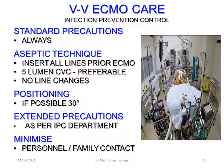For infection prevention and control, standard and universal precautions are always implemented, especially hand hygiene and aseptic technique. Prior to ECMO, a five-lumen CVC is preferable to provide multiple access lines without extra punctures. No line changes are recommended due to infection and bleeding risk. Head-up positioning is preferred to avoid ventilator-associated pneumonia and improve secretion drainage. Extended precautions depend on your organizational infection prevention policy, and minimizing personal and family contact is preferable.